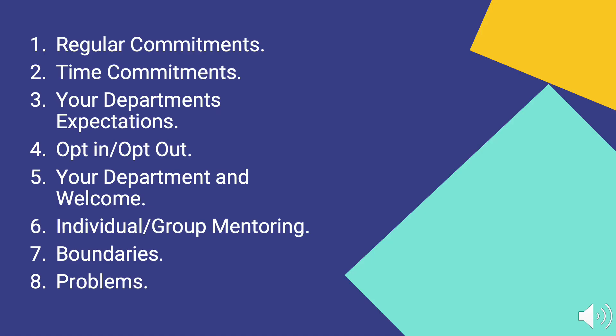Here is an outline of what we'll cover in part 2. We'll look at your regular commitments, the amount of time SAM should take you, your department's expectations, the difference between opt-in and opt-out schemes at the departmental level and what that will mean for you, your department and welcome, the differences between individual and group mentoring, how to set boundaries, and what to do in the unlikely event of any problems.